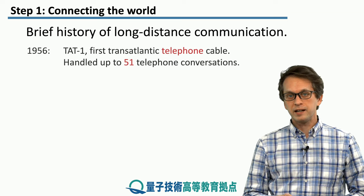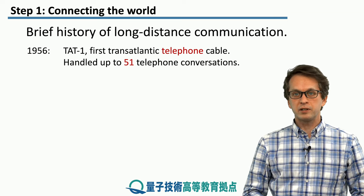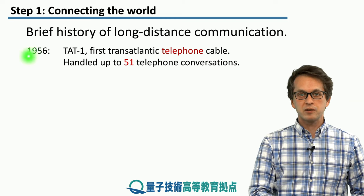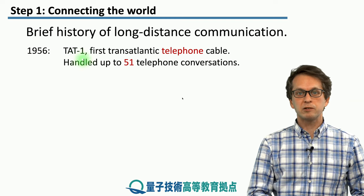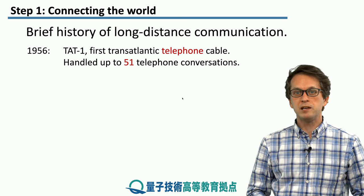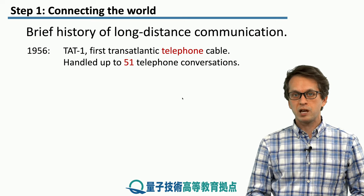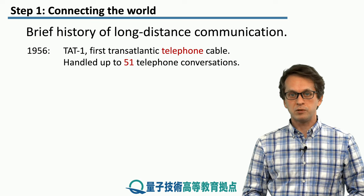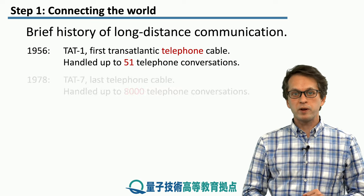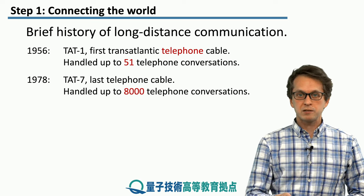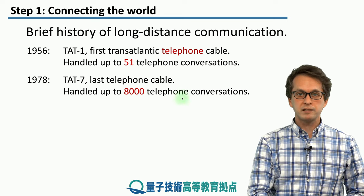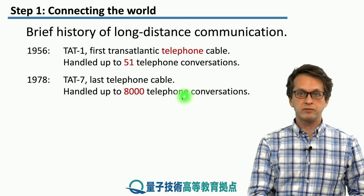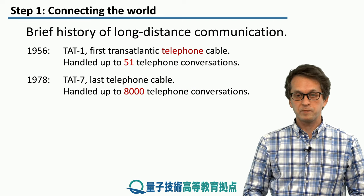After the telegraphic cable came telephone cables. In 1956 we had the first transatlantic telecommunications cable, called TAT-1, and this telephone cable was able to handle 51 concurrent telephone conversations. Compare that with two decades later — the last of the telephone cables, TAT-7, which could handle a staggering 8,000 telephone conversations concurrently.